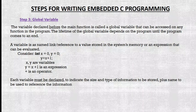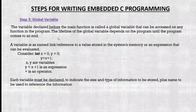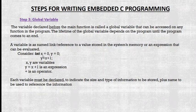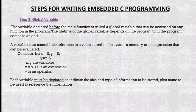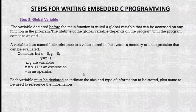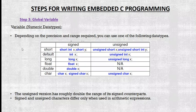Step three is declaring global variables. Whatever variable we declare before the main function is called a global variable, so it can be accessed by any function in the program. For example, we declare: integer x = 0, y = 0. Each variable must be declared to indicate the size and type of information to be stored. Numeric data types include short, int, long, float, double, and character.